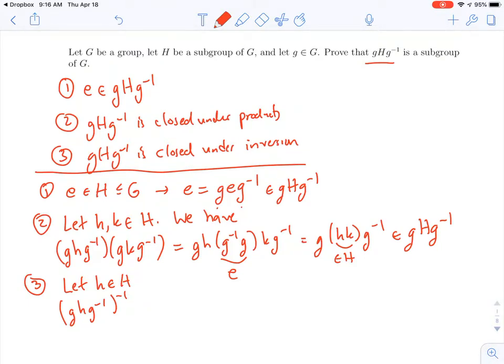But if you invert a product, then you're going to reverse the order of the elements, and then invert them. So the first one then will be g inverse inverse, which is just g, then the h inverted, and then the g inverted. But h was a subgroup, so it's closed under inversion, so h inverse is also an h, and so this is in gHg inverse.